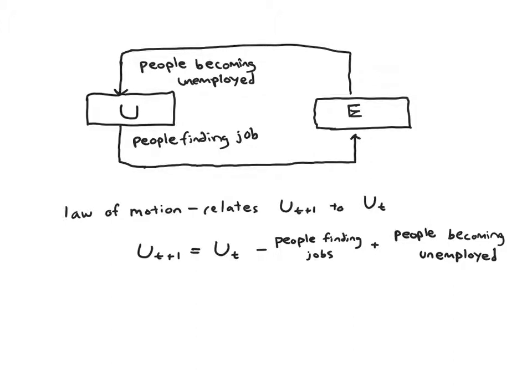But of course, to do calculations we're going to need some actual equations, and the key equation for this type of model, for a dynamic model, is that you're always going to need some law of motion. Which is a fancy way of saying it's an equation that relates period t variable to a period t+1 variable. So here it'll be an equation that relates unemployment in period t to unemployment in the next period, Ut+1.